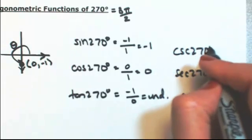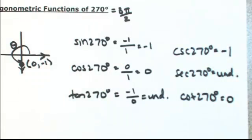And then the cosecant of 270 degrees, take the reciprocal of negative 1, and we get negative 1.